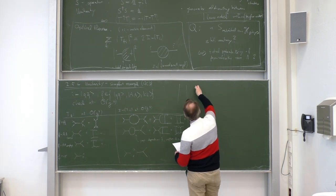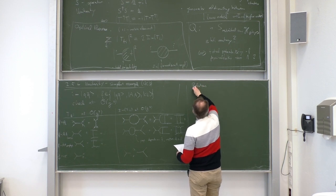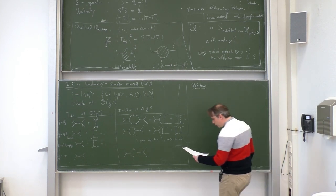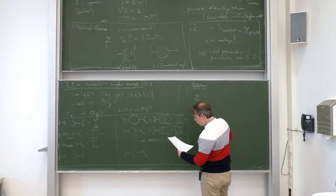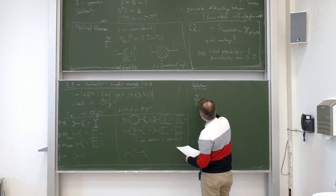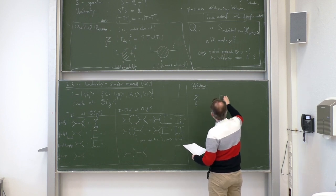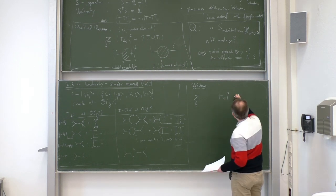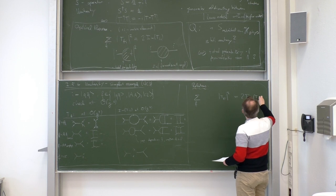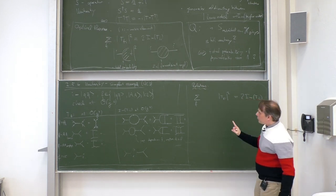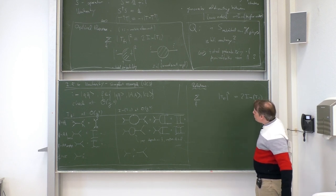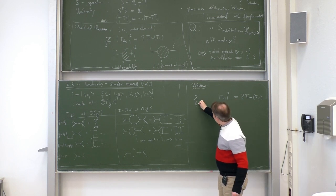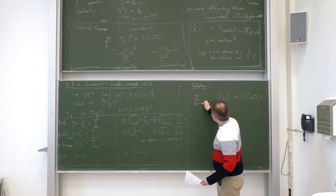Let us write down exactly some equations about the optical theorem. The first relation is directly a copy of the general statement: the sum over all final states of |T_fi|² equals two times the imaginary part of T_ii. This is the general relationship, now concretely applied to order g⁴ and for our initial state QQ-bar. The sum gets contributions from final states QQ-bar, AA, and CC-bar.